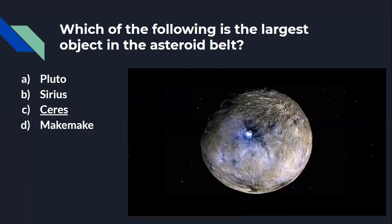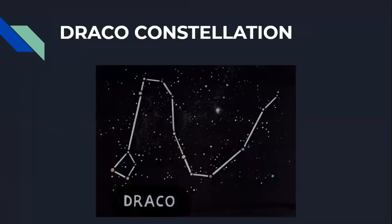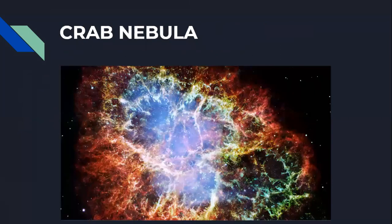Which of the following is the largest object in the asteroid belt? It is Ceres. This is the Draco constellation — a constellation is a cluster of stars forming a shape. And this is the Crab Nebula.